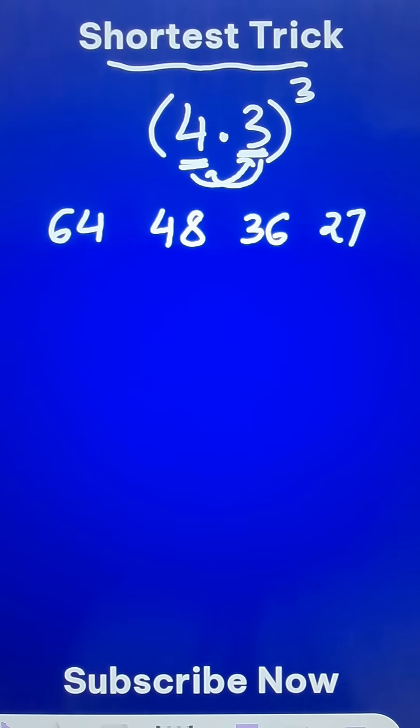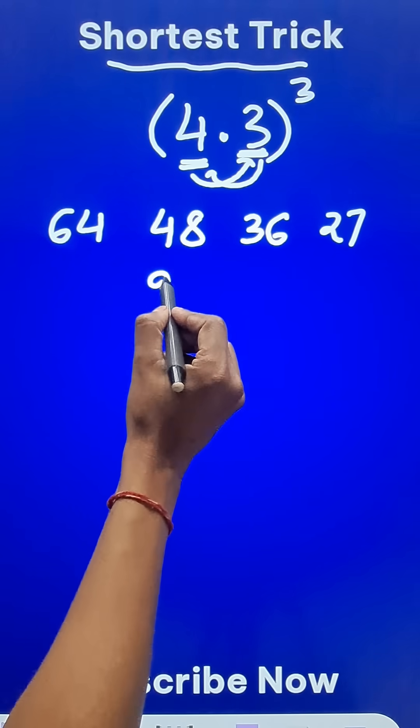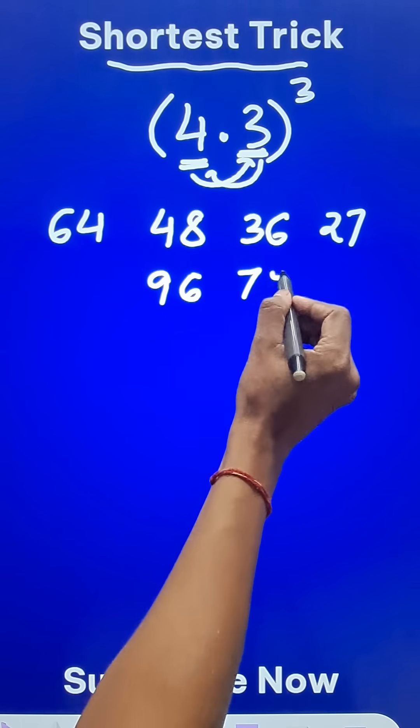Now after obtaining these four numbers, the middle two numbers are to be doubled. 48 doubled is 96, and 36 doubled is 72.